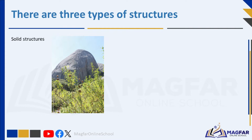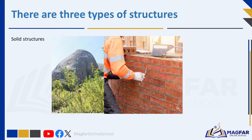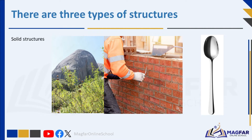A solid structure is solid, usually strong, and can support relatively heavy loads. Some things like forks, spoons and knives are solid objects that consist of one part only. Advantages of solid structures are that they are held in place by their own weight, and losing small parts often has little effect on the overall strength of the structure.